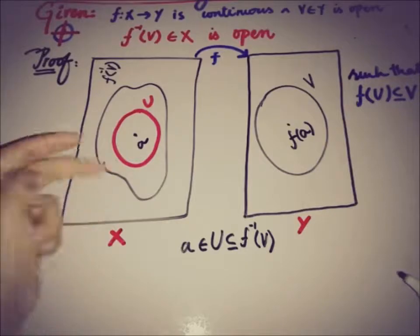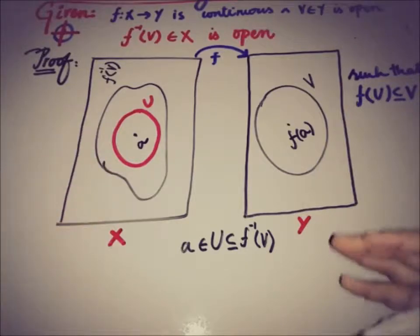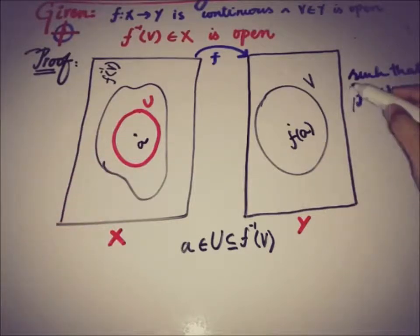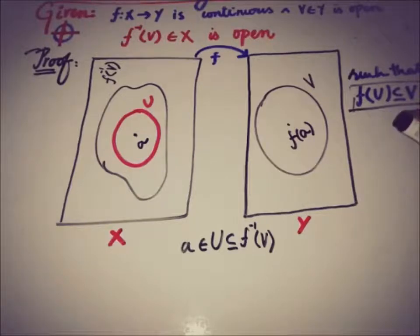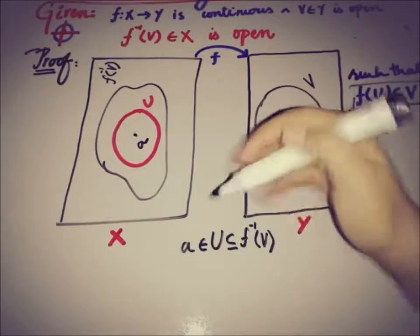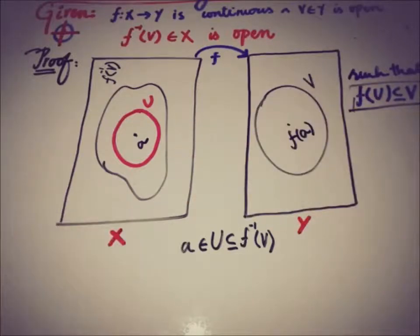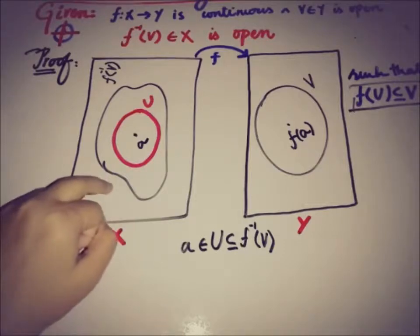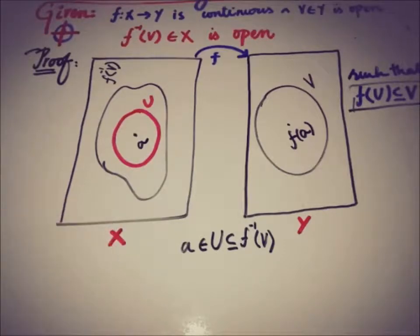Why is U a subset of f⁻¹(V)? This is because by the definition of continuity, f(U) is a subset of V, which means U is a subset of f⁻¹(V) — that is, f⁻¹(V) is a superset of U.